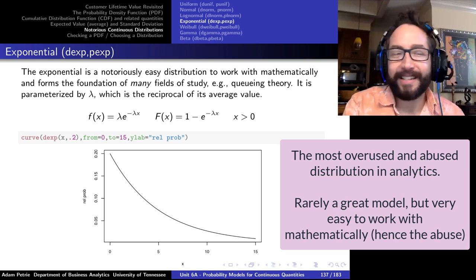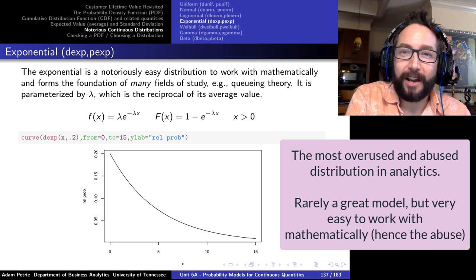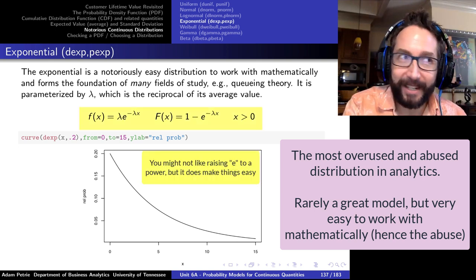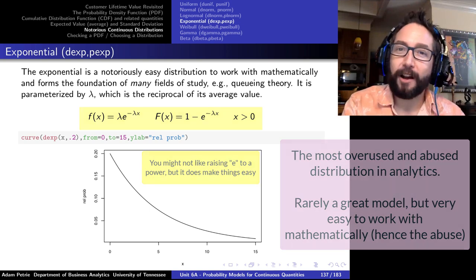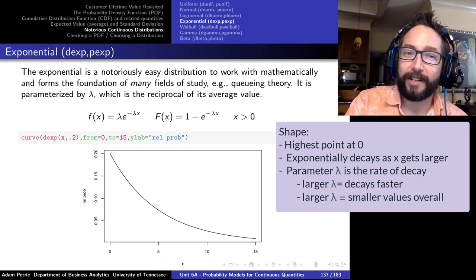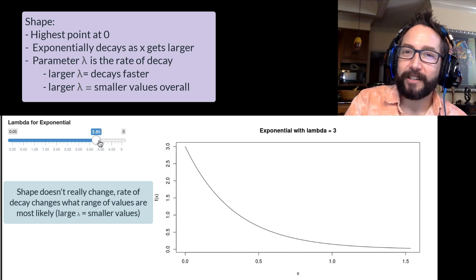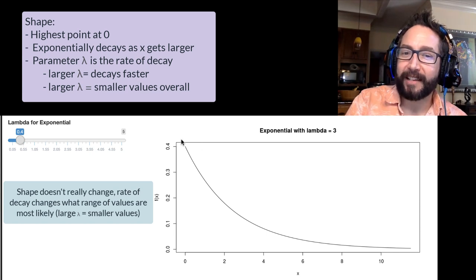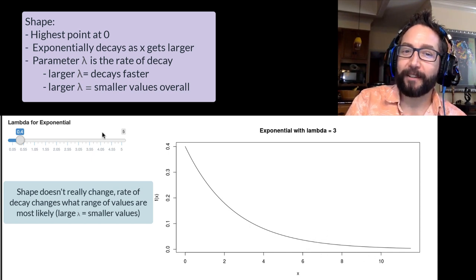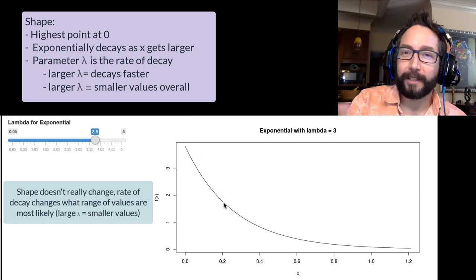The exponential distribution is notorious not necessarily because it perfectly reflects actual service or wait time distributions, but because it's very easy to work with mathematically and actually does appear in science quite a bit. Its shape is exponentially decreasing with only one parameter, lambda. Small values of lambda mean the curve decreases slowly — relatively high probabilities of finding large values of x. Bigger lambda means the curve decreases quickly, and only small values of x are likely to be seen.